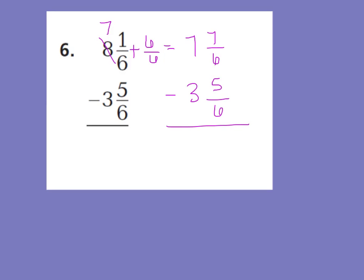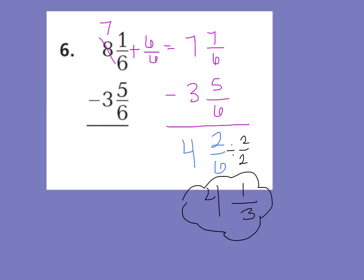Now we can subtract. 7 sixths minus 5 sixths is 2 sixths, and 7 minus 3 is 4. My numerator and denominator are both even, so I can divide by 2 to simplify: 2 divided by 2 is 1, and 6 divided by 2 is 3. So 4 and 1 third would be the final simplified answer.